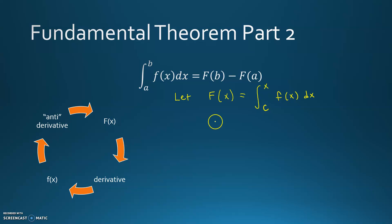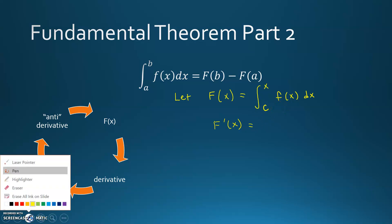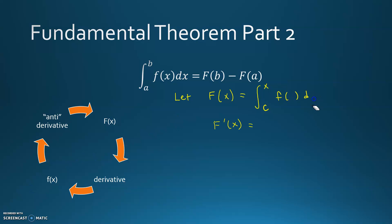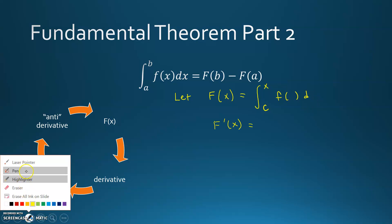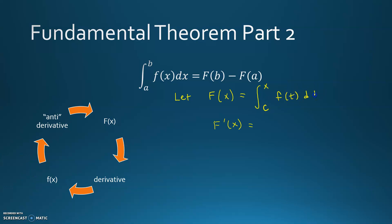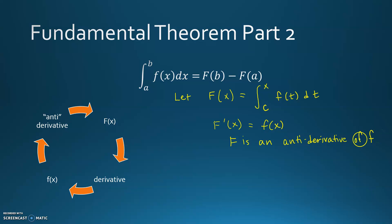Because of the first part of the fundamental theorem, if I take the derivative of big F — where the variable inside should be t — I get little f as my derivative. That means big F is an anti-derivative of little f. There's nothing special about it; I just constructed it, and it works because when I take the derivative of big F, I get little f.